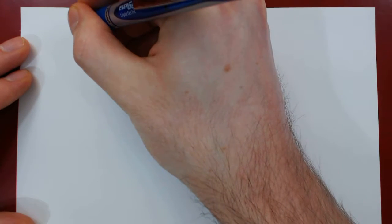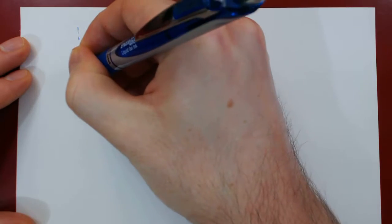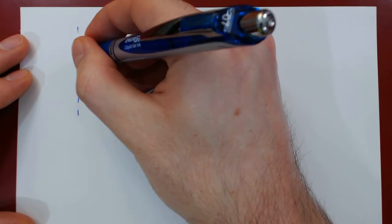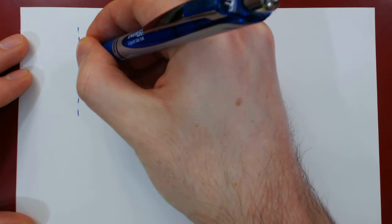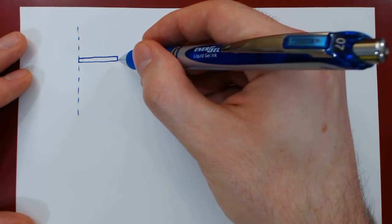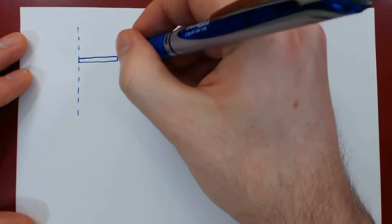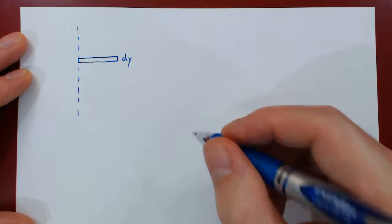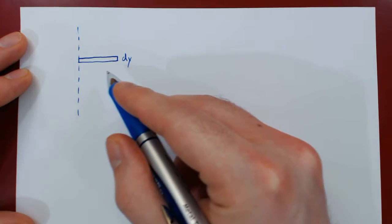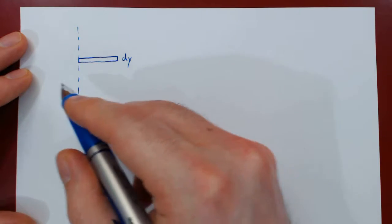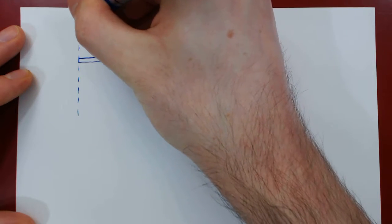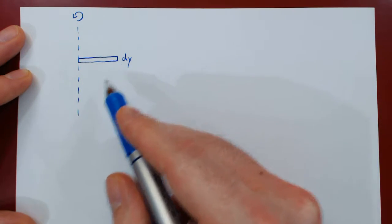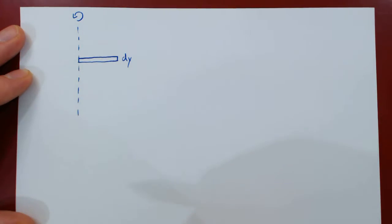Imagine that we take a vertical axis, and perpendicular to this vertical axis, we draw an infinitesimal horizontal rectangle that touches the axis. The width of the rectangle is a small change along the y-axis, so its width is dy. Now imagine that we take this infinitesimal horizontal rectangle and revolve it about this vertical axis of revolution.